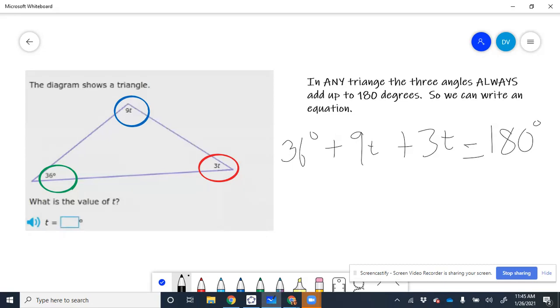Now we're going to combine the parts that are alike. These two terms, the terms that are alike, these two terms are alike because they both have the letter T. The 36 degrees doesn't have a T in it, so we don't want to include that just yet.